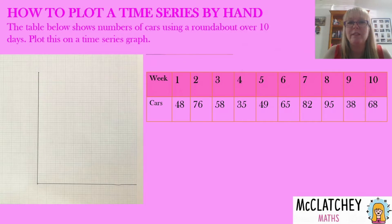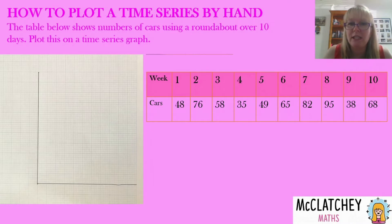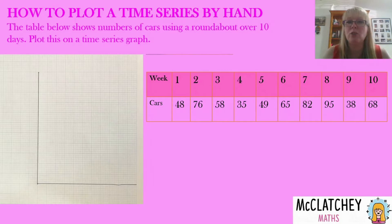So firstly I've got a worked example here. The table below shows the number of cars using a roundabout over 10 days and we're going to plot this on a time series graph. I've already created the axes. The first thing you're going to do is have a look at how many data points you have — you've got 10 — and make sure that you space out your axes at the bottom, giving one square grid to each.